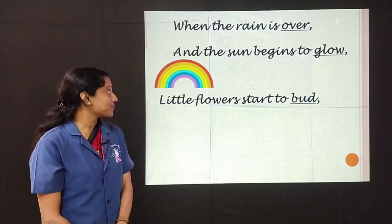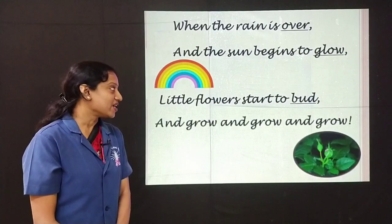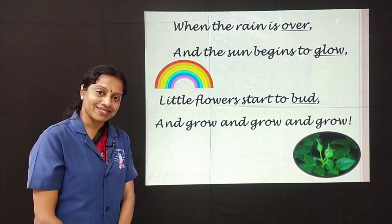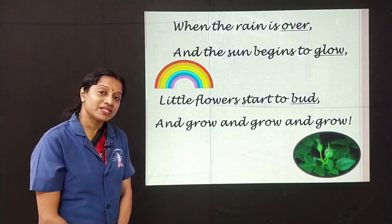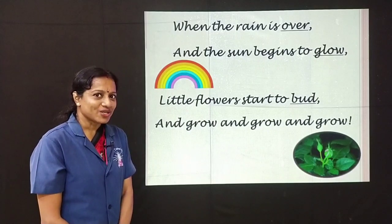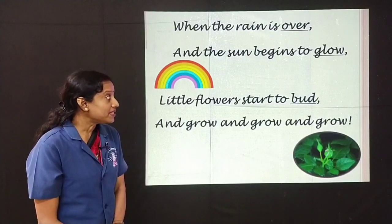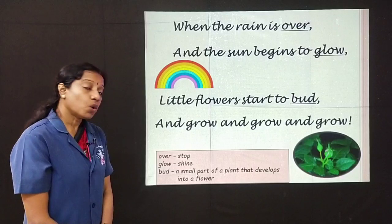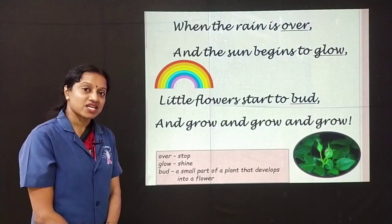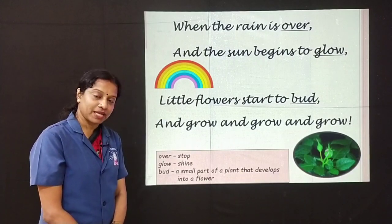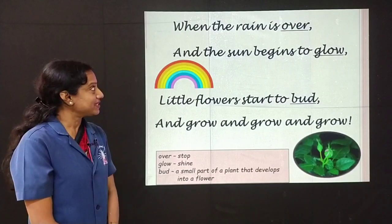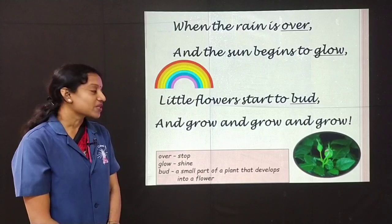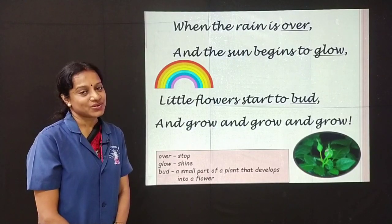Little flowers start to bud and grow and grow and grow. What is a bud, children? A bud is a small part of a plant that grows and develops into a beautiful flower. You must have seen a bud in your garden. The meanings: over means stop, glow means shine, and bud is a small part of a plant that develops into a flower. When the rain is over and the sun begins to glow, little flowers start to bud and grow and grow and grow.